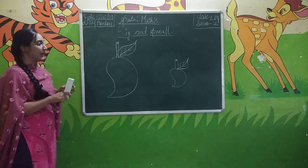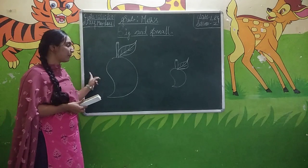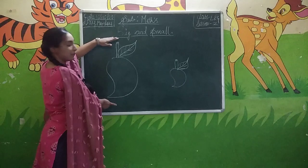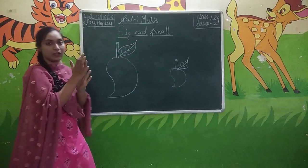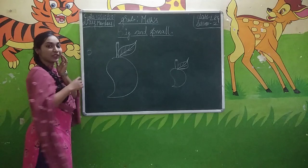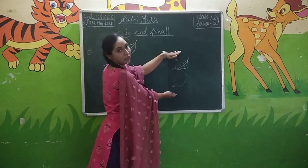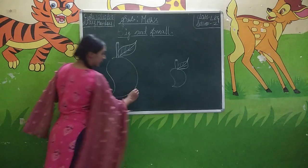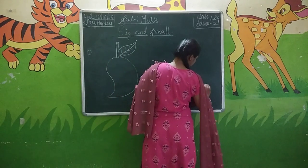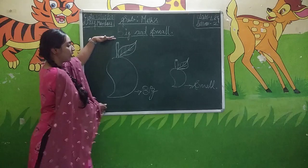So students, here I have drawn a picture of fruit. Which fruit is this? This is a mango fruit. I have drawn two pictures of mango — one is a big mango whereas another is a small mango. So let us compare: first mango is big. This is a big mango compared to small mango, whereas this one is a small mango compared to big mango. Big, small. Big mango, small mango.